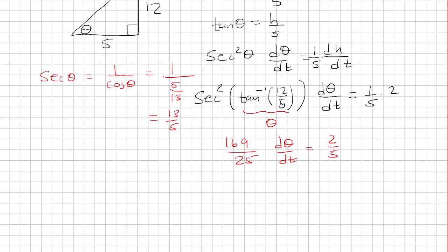We're going to multiply both sides by 25 over 169. These are going to cancel. We're left with dθ/dt.